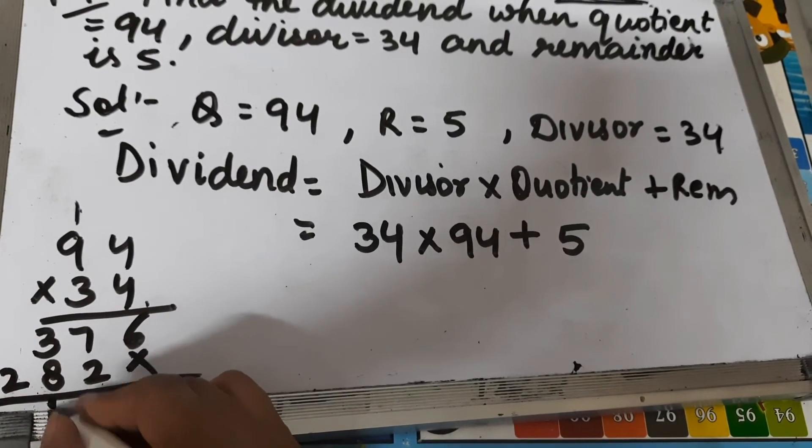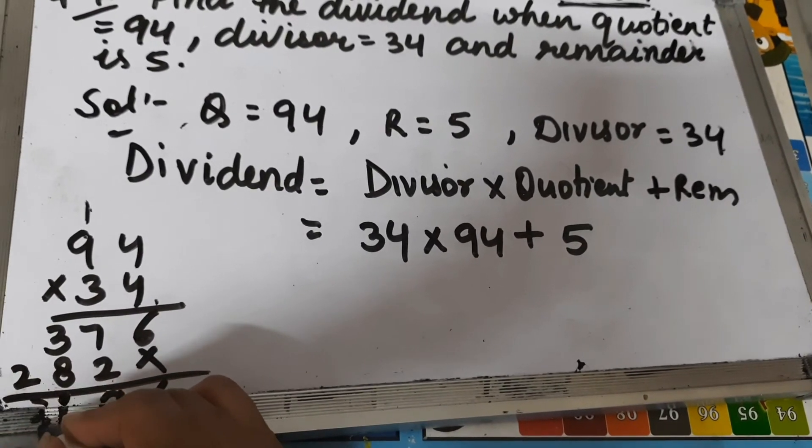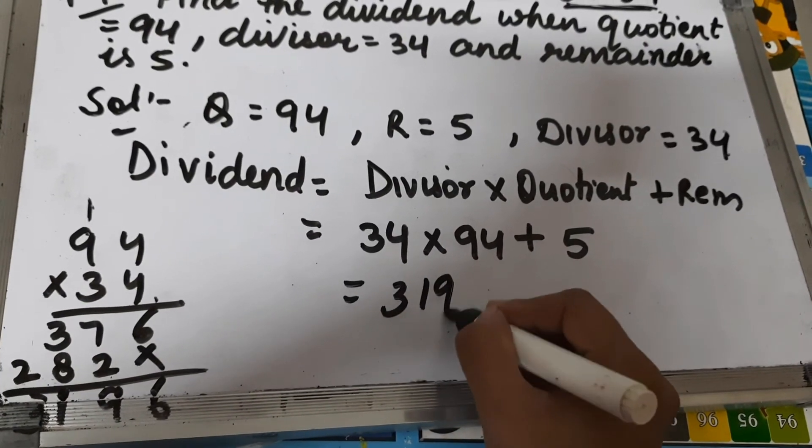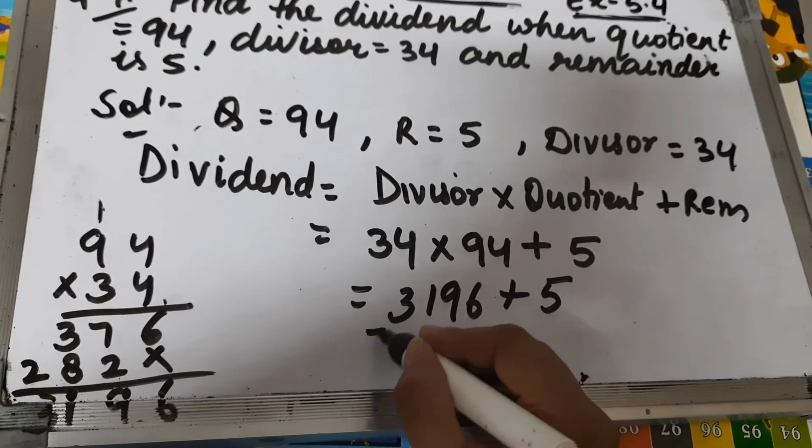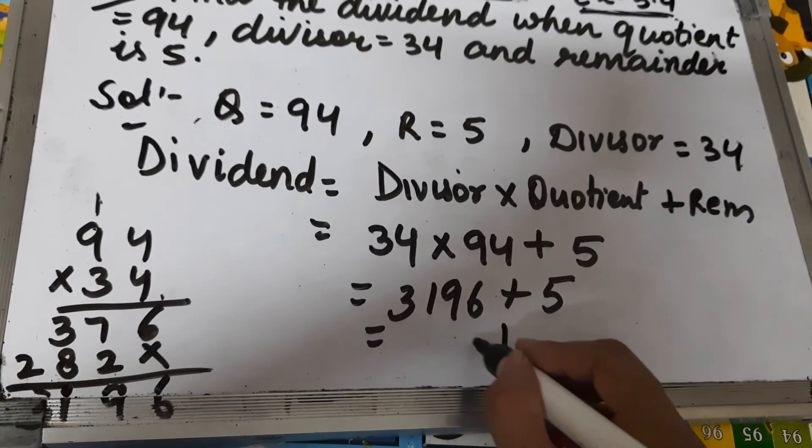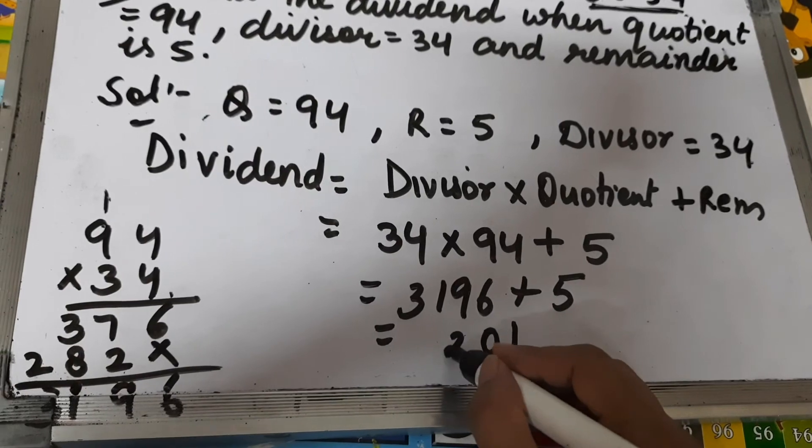2 plus 1 is 3. So this will be 3196. Now we add 5 to this: 6 plus 5 is 11, 9 plus 1 is 10, 1 plus 1 is 2.